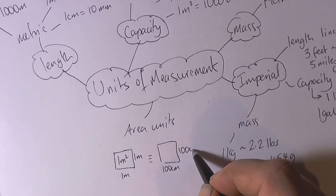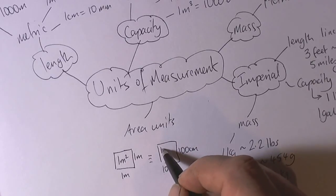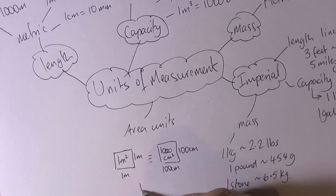It will be 100 centimetres by 100 centimetres, and 100 times 100 is 10,000 square centimetres. So 1 square metre is equivalent to 10,000 square centimetres.